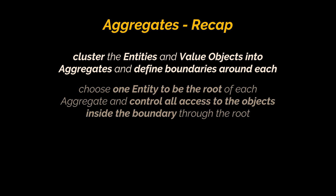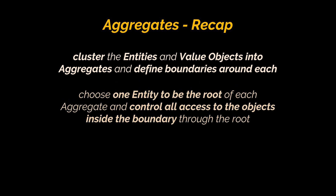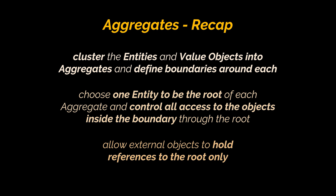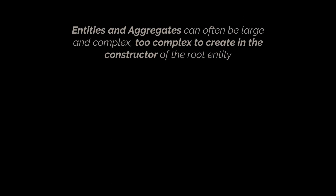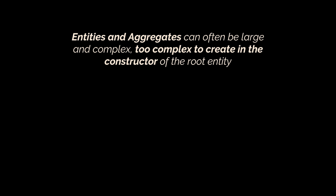In a nutshell: cluster the entities and value objects into aggregates and define boundaries around each. Choose one entity to be the root of each aggregate and control all access to the objects inside the boundary through the root. Allow external objects to hold references to the root only. A simple example is shown in the diagram — the customer is the root of the aggregate and all other objects are internal. If the address is needed, a copy of it can be passed to external objects and can only be accessed via the customer.